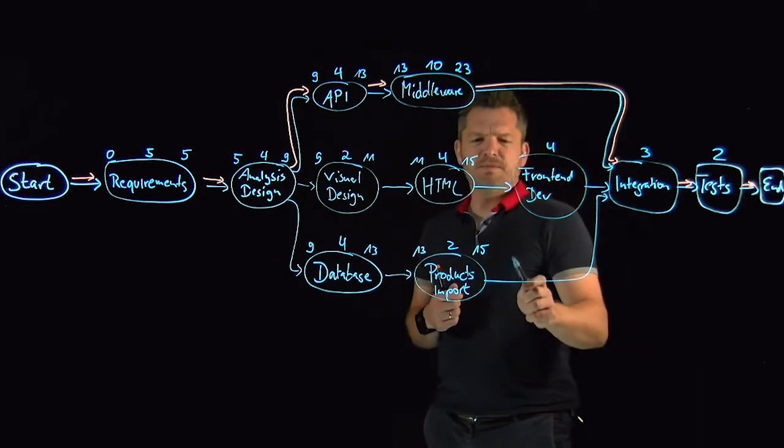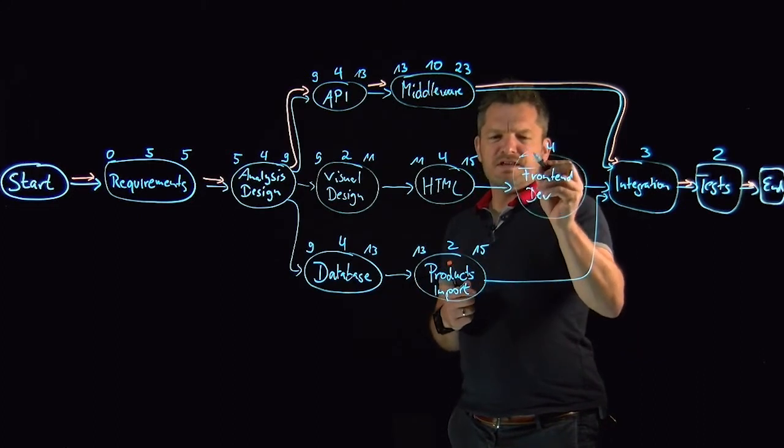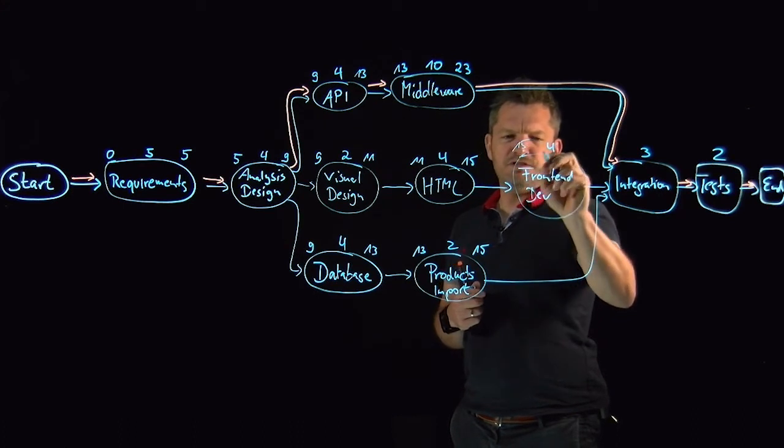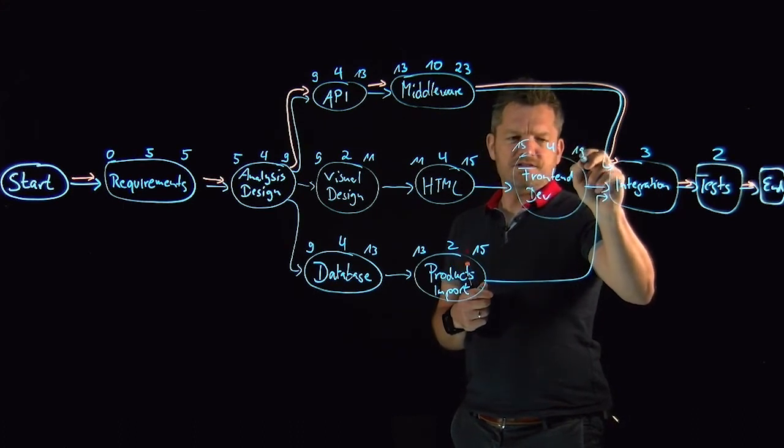And now you see the frontend depth is on the same path over here. We can take this number over. Fifteen plus four is nineteen.